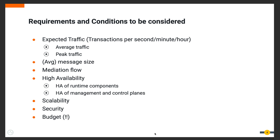In order to define the best deployment pattern for a specific use case, there are a set of business and technical requirements which must be considered. The most important is the expected load or traffic in terms of API calls per unit of time — both average and peak traffic. The average message size and whether or not mediations are required are also important factors. These should lead to correct sizing of the number of gateways and other components.